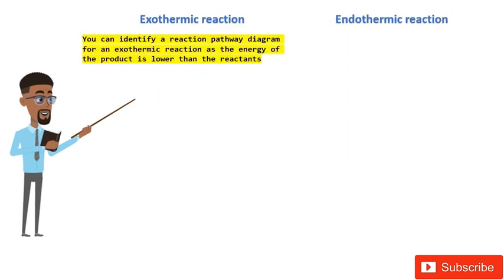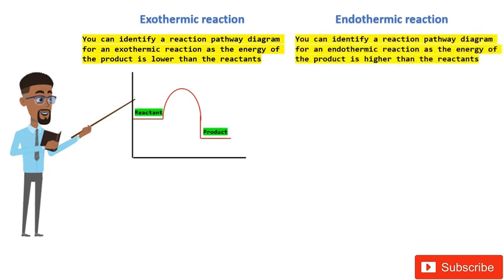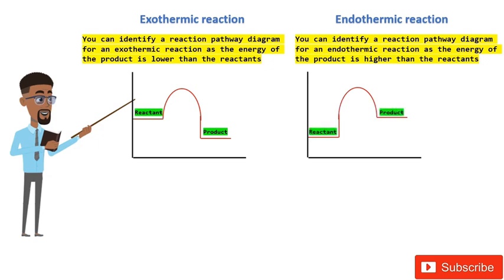You can identify a reaction pathway diagram for an exothermic reaction as the energy of the product is lower than the reactants. Take a look at the graph and note the position of the reactant energy level and that of the product. It is quite different for endothermic reactions — you can identify a reaction pathway diagram for an endothermic reaction as the energy of the product is higher than the reactants.